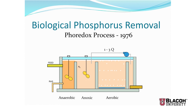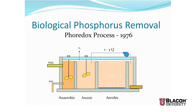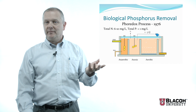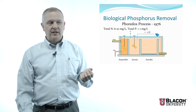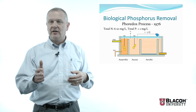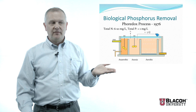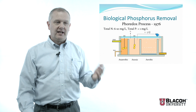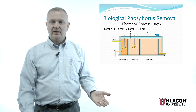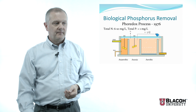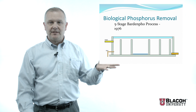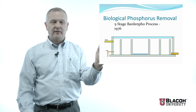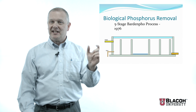This process can reduce nitrogen to about 5 to 10 milligrams per liter and reduce total phosphorus down to about one milligram per liter or less. So if a plant has a limit of one milligram per liter, they can reliably remove phosphorus biologically without buying any chemical or dealing with chemical sludge. We can also do this in the BARDENPHO process — in fact, the 'pho' in BARDENPHO actually stands for phosphorus, and it was originally designed as a five-stage system with the anaerobic phosphorus removal stage up front.